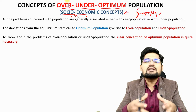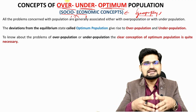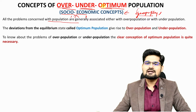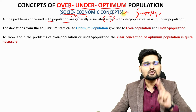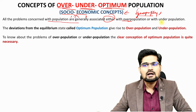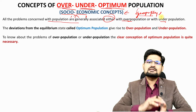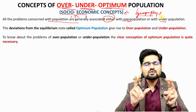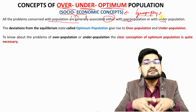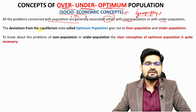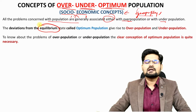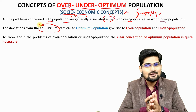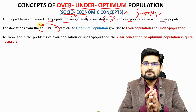We need to understand why these three terms matter. All problems concerned with population are generally associated with either two situations: too much population or too little population. These are the two extremes we are always concerned with — deviations from the equilibrium. Just as in physical geography we talked about isostatic balance, balance is always important for a system to run smoothly.